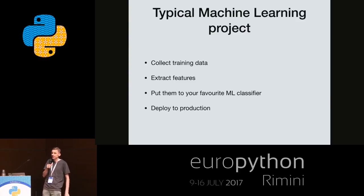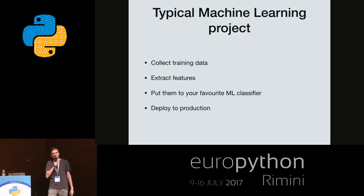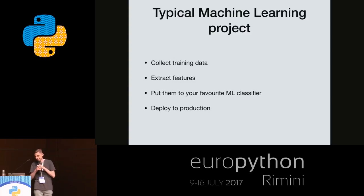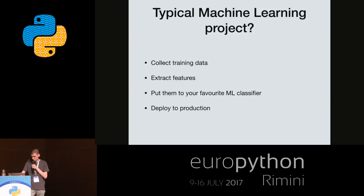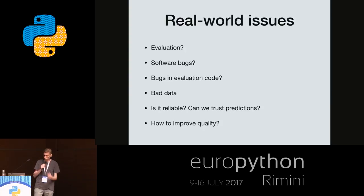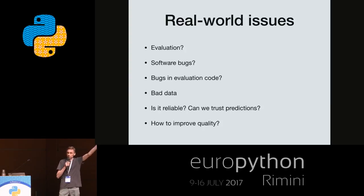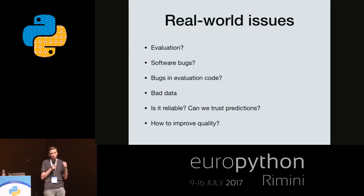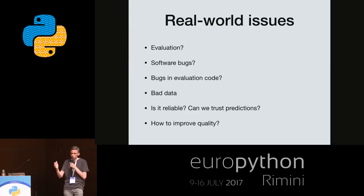Cleanup of data — yeah. What else is missing? Evaluation, cross-validation. There is a lot of things missing. Let's say we added evaluation. We computed accuracy score. We performed cross-validation. We got 90% accuracy or F1 score.